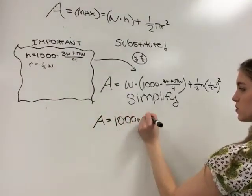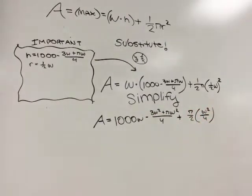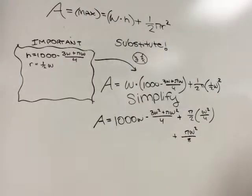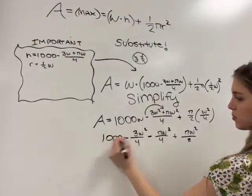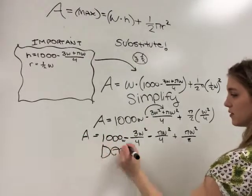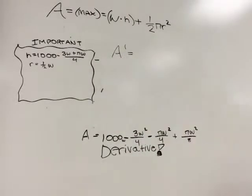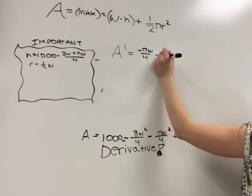To simplify, distribute the W through the brackets. That would equal 1,000W minus 3W squared plus πW squared over 4 plus πW squared over 8.